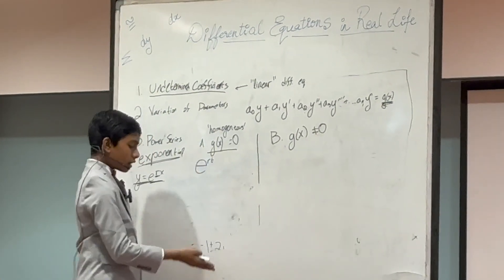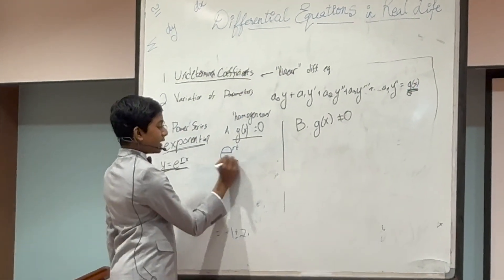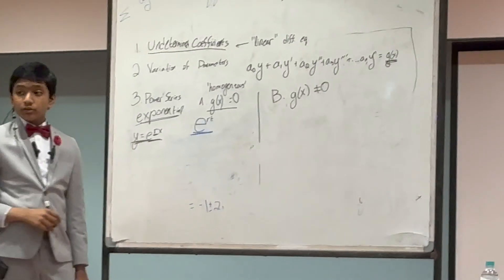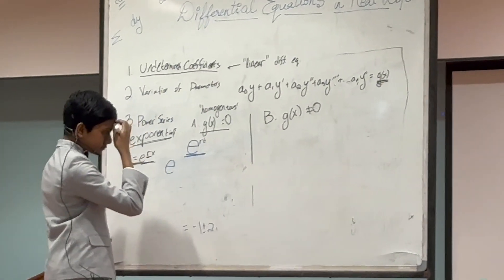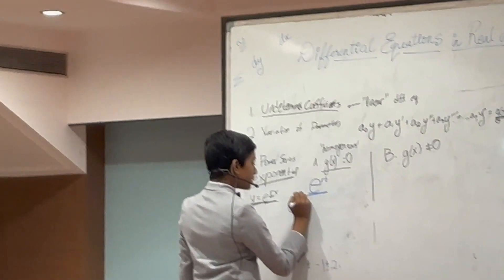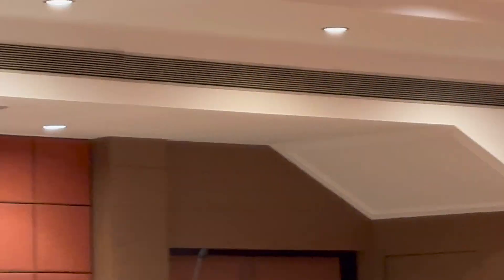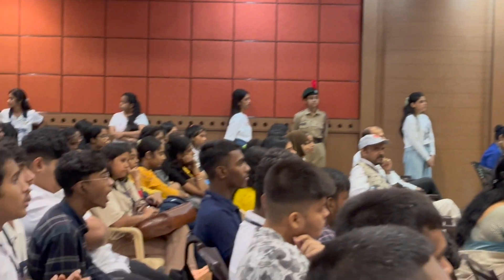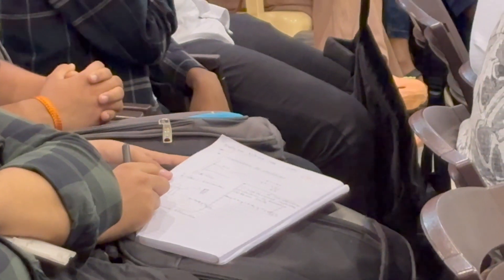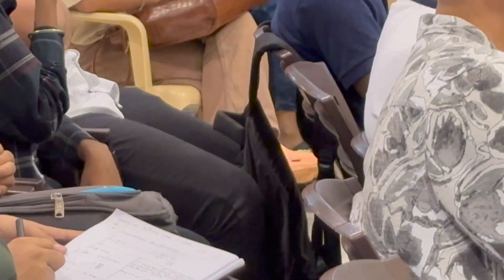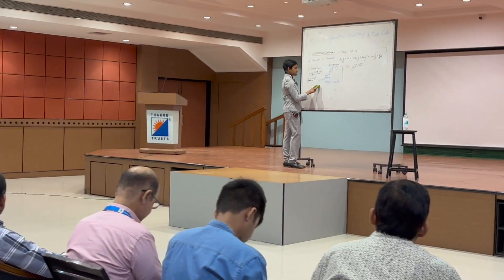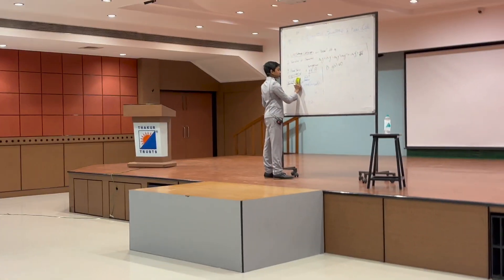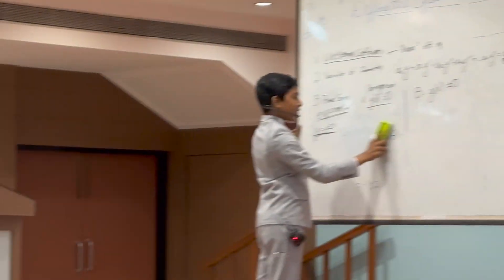All we have to do is use Euler's formula: e to the i theta equals cosine theta plus i sine theta. That's essentially how we handle equations whose characteristic equation has complex roots.